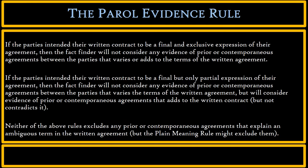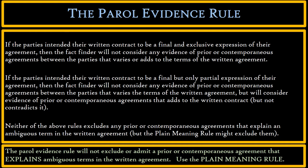Let's look at the actual Parole Evidence Rule. You'll see many variations of the Parole Evidence Rule, but this one is the best to learn from. The Parole Evidence Rule will not exclude a prior or contemporaneous agreement that explains ambiguous terms in the written agreement — for that, we go to the plain meaning rule. As stated in the rule: neither rule excludes any prior contemporaneous agreement that explains an ambiguous term in the written agreement, but the plain meaning rule might exclude them.